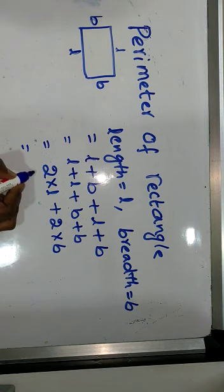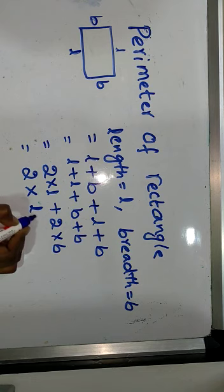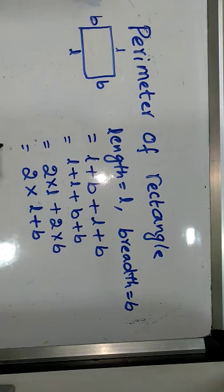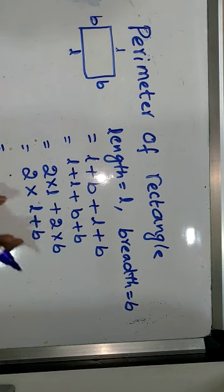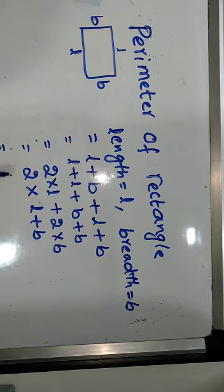What is common here? 2. So can we write it as 2 into L plus B since 2 is common? So perimeter of rectangle is 2 times of L plus B.